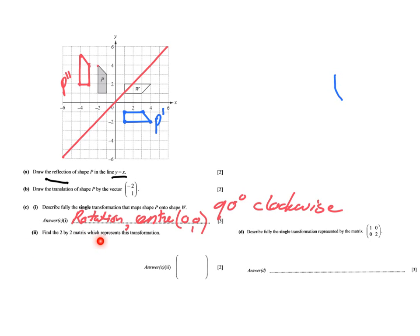Part d: find a 2×2 matrix which represents this transformation. This type of rotation can be captured in a matrix. To find it, I look at two specific points. Whenever I have to find a matrix, I look at the point (1, 0) first — x is 1, y is 0. After the rotation — 90 degrees clockwise about the origin — where will this point be?